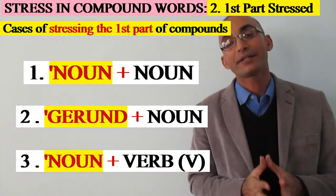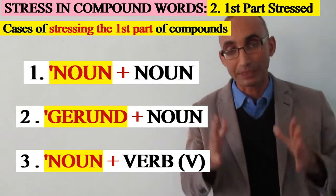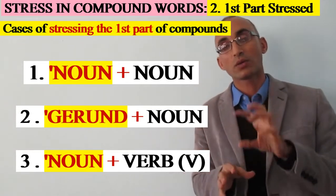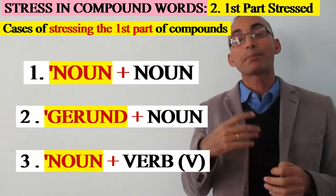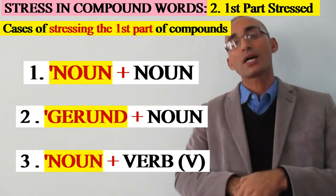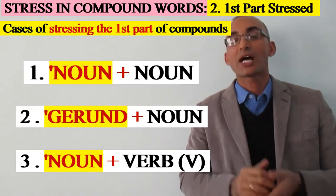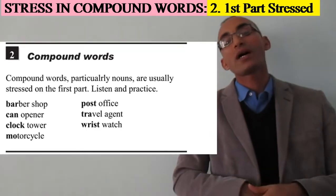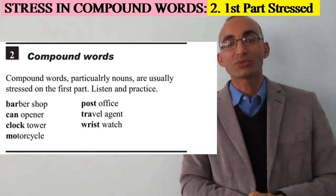To summarize: the two major cases when we stress compound words on the first part or element. First case: compound nouns — noun plus noun or gerund plus noun — we always stress the first element. Second case: compound verbs consisting of noun plus verb — we also stress the first element, which is the noun. Thank you for your attention and see you in our third part about cases when we should stress the second element in compound words.